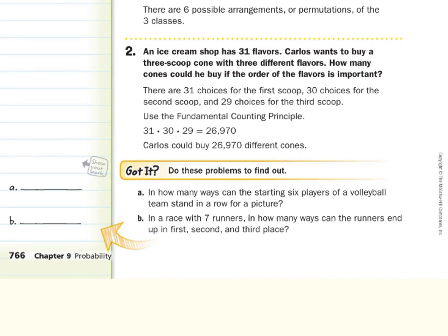On our got it questions, in how many ways can the starting six players of a volleyball team stand in a row for a picture? Well, we have for the first spot, we have six different players. For the second spot, we're down to five different players. For the third spot, we're down to four players that could be there. One player, then three players, then two players, and that last spot, there's just one person left to fill that. So again, we have six choices for the first spot, then five, four, three, two, and one. And if we multiply these numbers together, six times five times four times three times two times one, we would end up with 720 different ways the team can stand in a row for a picture. So 720 is our answer for A.